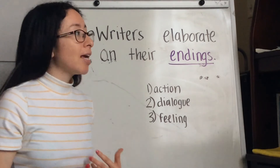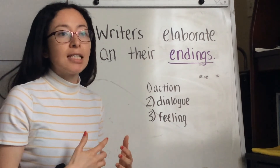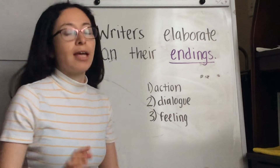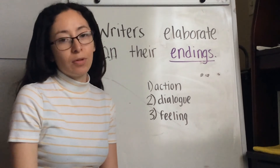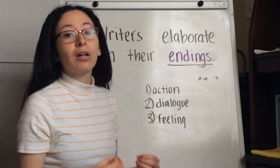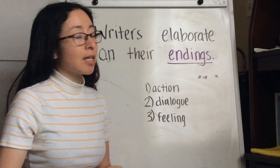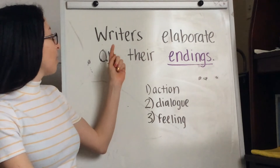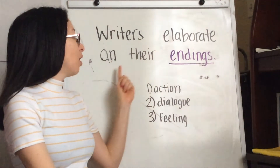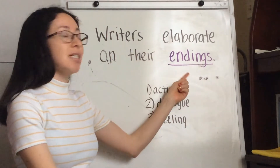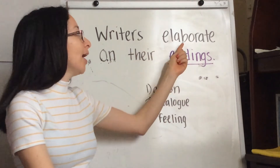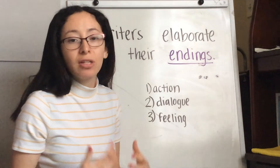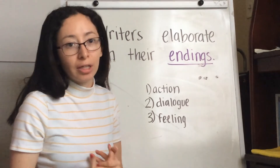Today, I noticed that some of our endings — we usually just say the end and then we finish. So we're going to work on our endings today. Let's read what we're doing: writers elaborate on their endings. Elaborate means it's when you give more details, when you make your ending stronger.